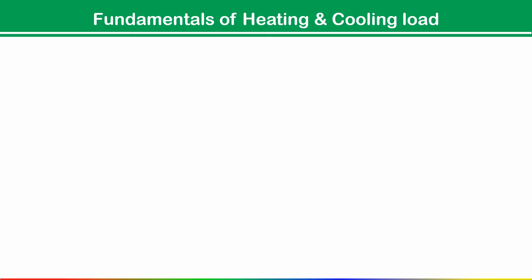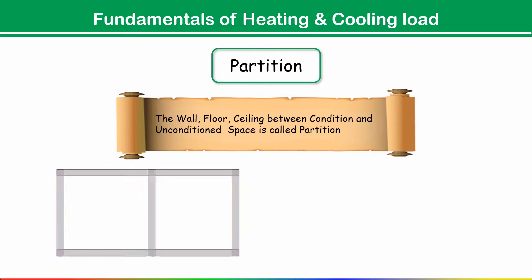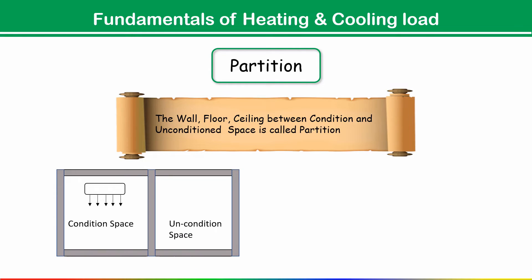Now, what is a partition? A partition is the wall, floor, or ceiling between a conditioned and an unconditioned space. For example, if you are providing conditioned air in one room and the adjacent room is unconditioned, the wall between the conditioned and unconditioned space is called a partition wall.